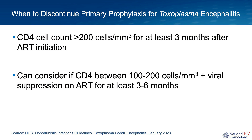Prophylactic medications can be discontinued if the patient is on combination antiretroviral therapy and has a sustained rise in CD4 count to over 200 for at least three months. You can consider discontinuing prophylaxis for individuals with a CD4 count between 100 and 200, provided they are on combination antiretroviral therapy and have achieved viral suppression for at least three months or more.